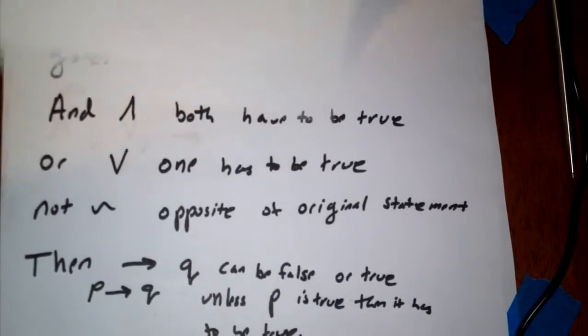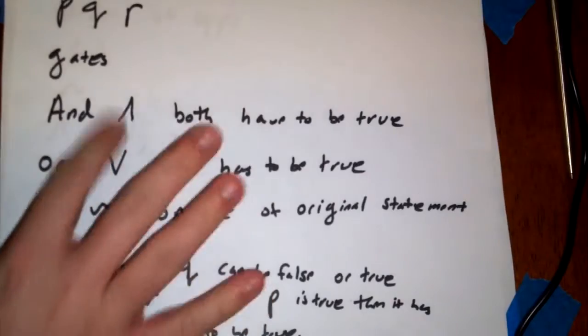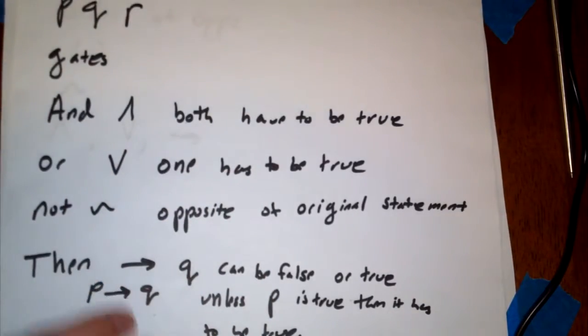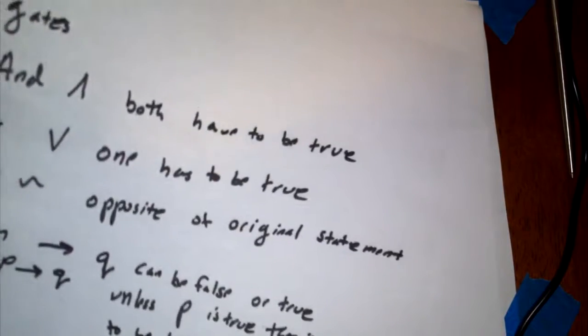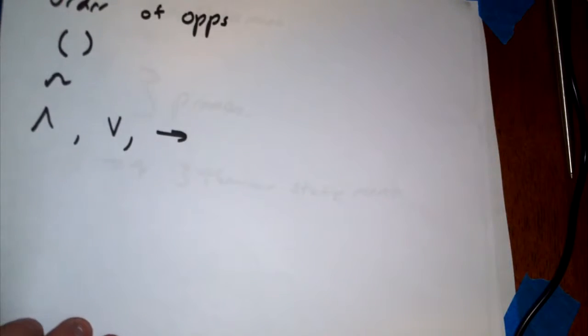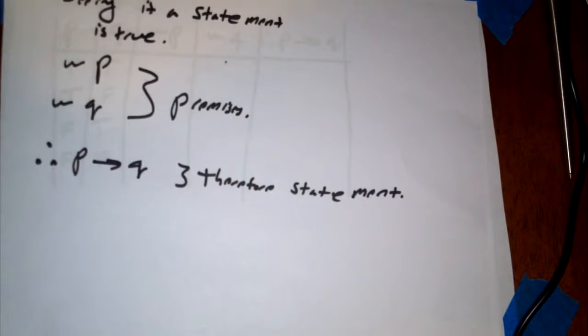In the last couple of videos, we went over the basic gates, the nots and then statements, and so forth. And then we also went over the order of operations when we were putting together statements. Now we're going to talk about seeing if a statement or multiple statements are true.